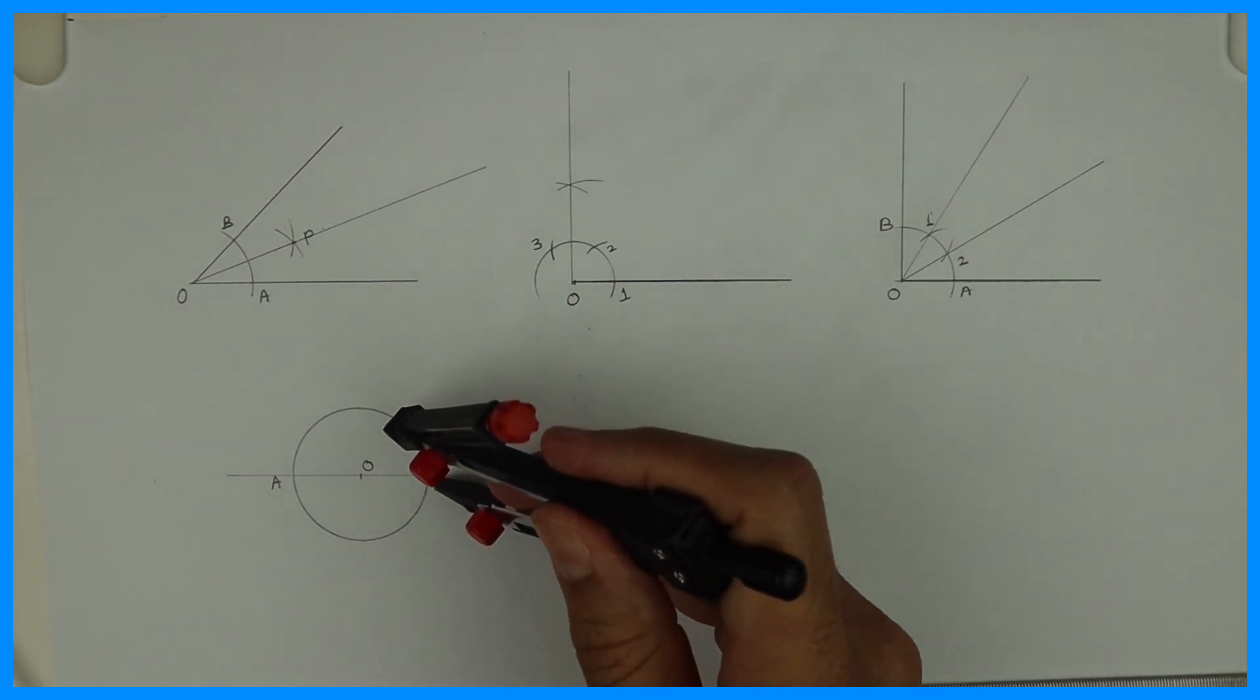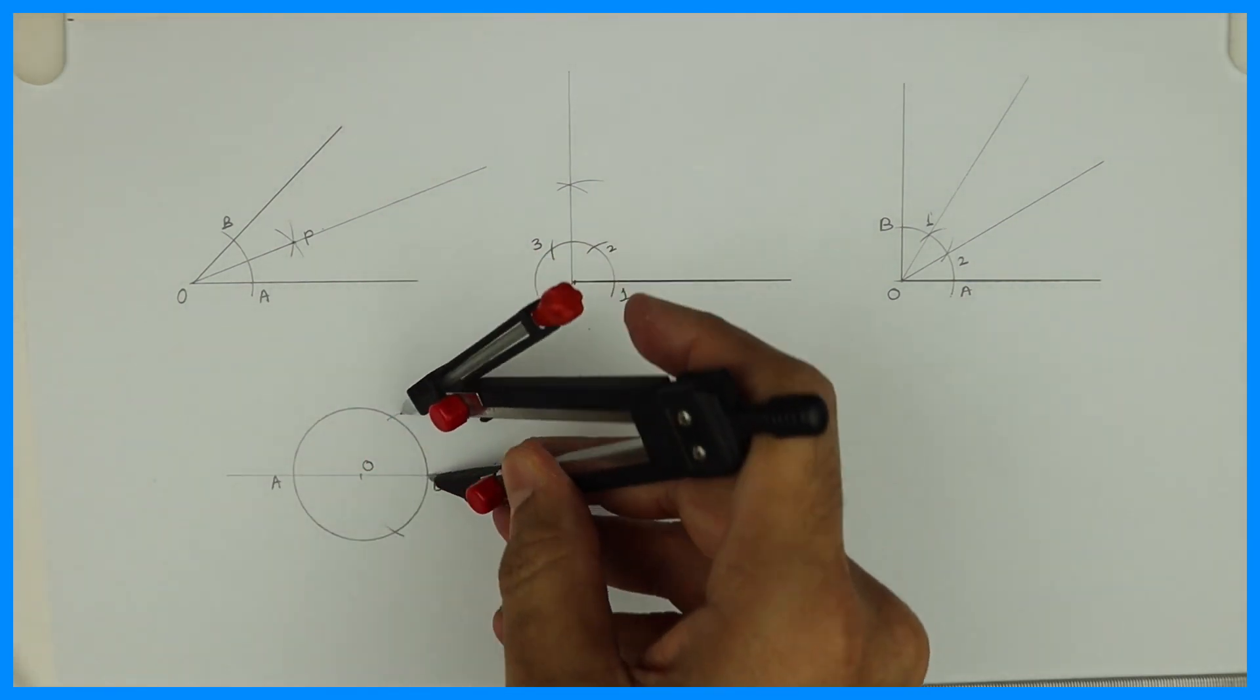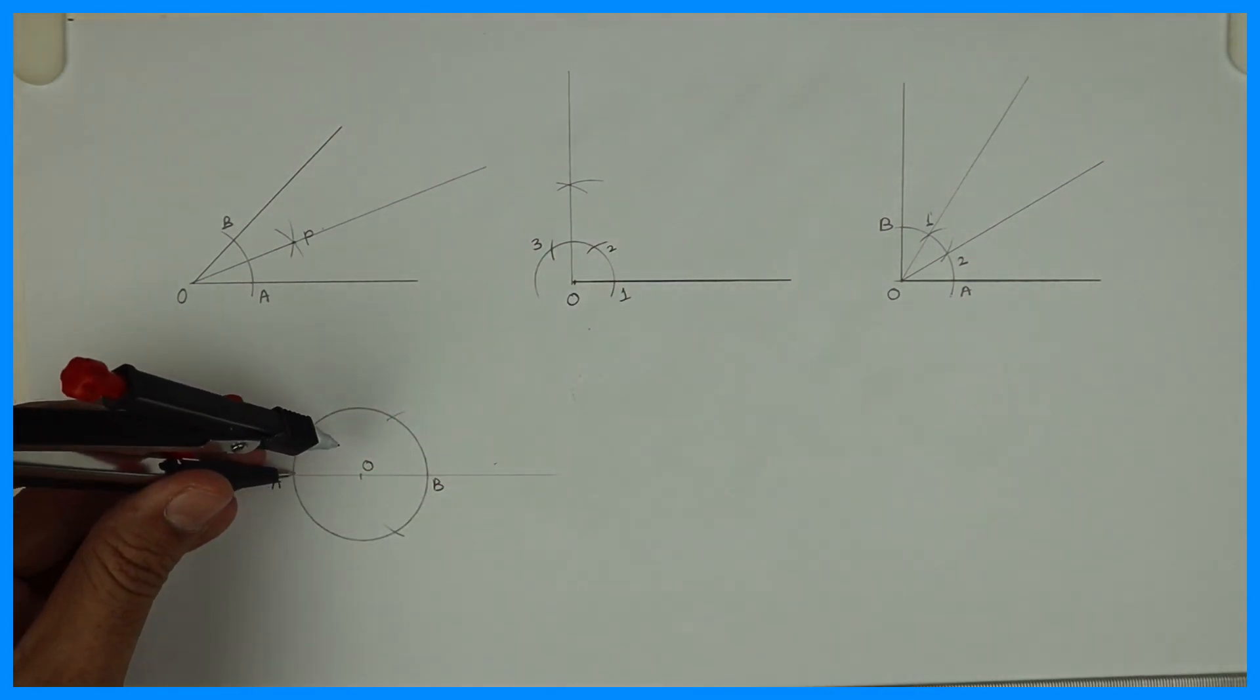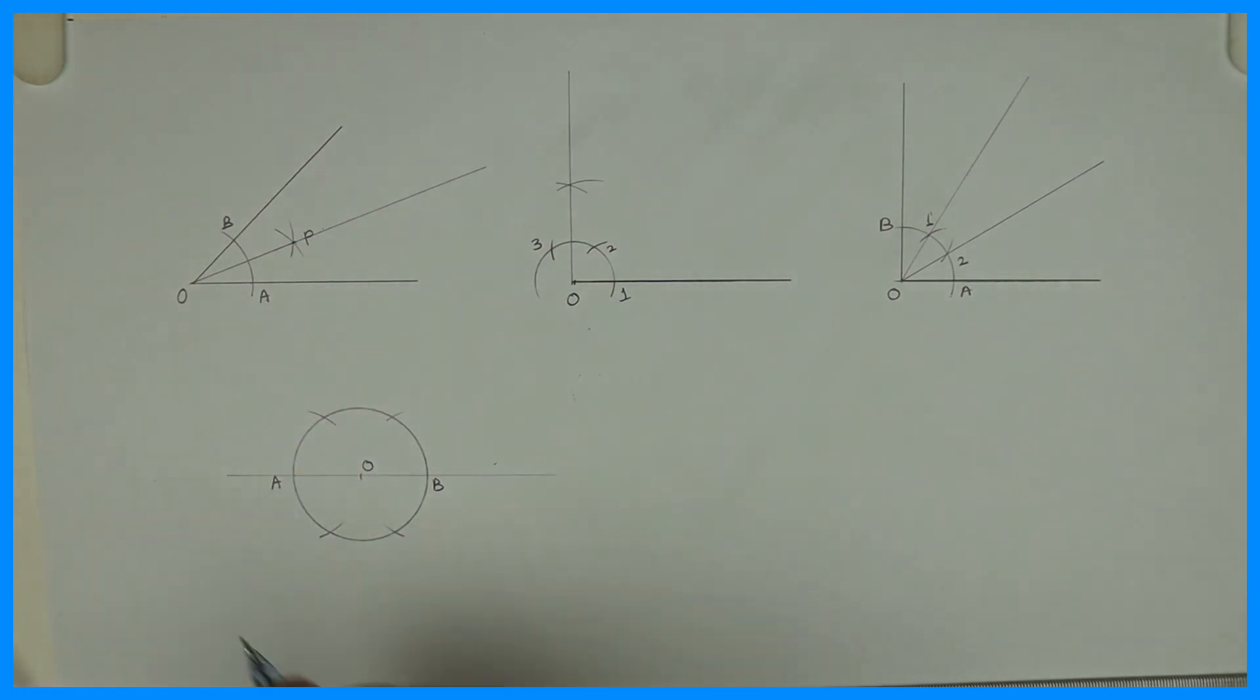Now how you divide into six parts? So you do the same. Take B to O, cut up and down. So take radius and cut from A and B. Right? A to O, cut up and down. So you'll get six parts.